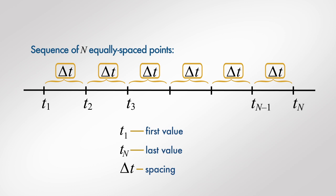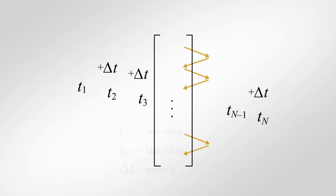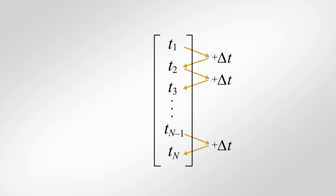We will represent the sequence of equally spaced values in MATLAB with a vector. For example, let's create a sequence where the first value is 2, the last value is 3, and the spacing between values is 0.2.